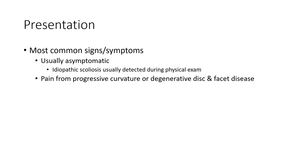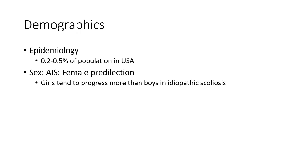Presentation: the most common sign is that idiopathic scoliosis is usually asymptomatic and will be detected during physical examination, with help from progressive curvature or degenerative disc disease. Epidemiology: 0.2 to 0.5% of the population in the USA. Adolescent idiopathic scoliosis shows female predilection; girls tend to progress more than boys.